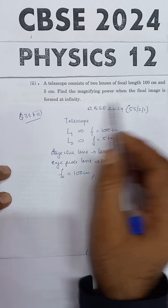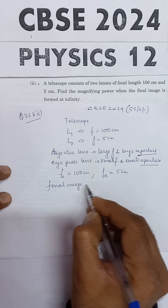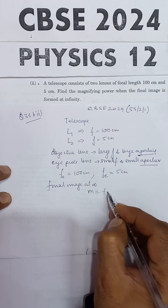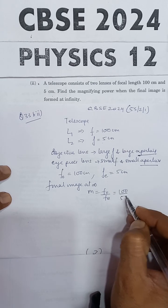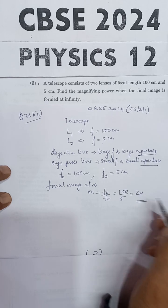And when the final image is formed at infinity, the magnification is FO upon FE. FO ki value 100 hai, aur FE ki value 5 hai. So the magnification will be 20. So this will be the final answer.